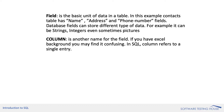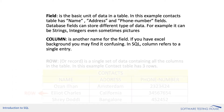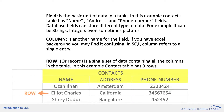Column is another name for the field. If you have an Excel background, you may find it confusing. In SQL, a column refers to a single entry. A row or record is a single set of data containing all the columns in a table. In this example, the contact table has three rows. In each row, you can see a name, address, and phone number field.